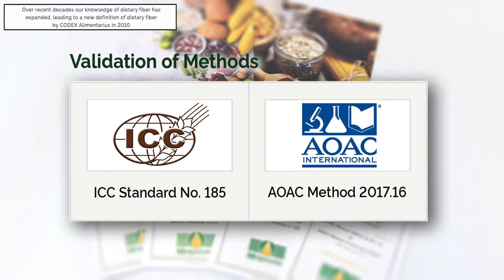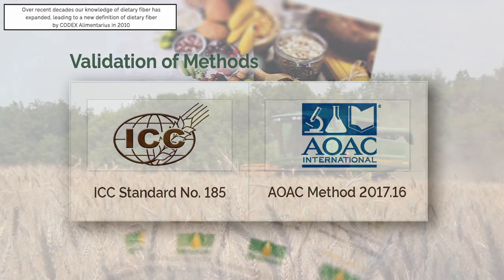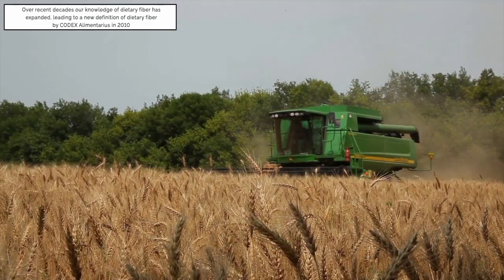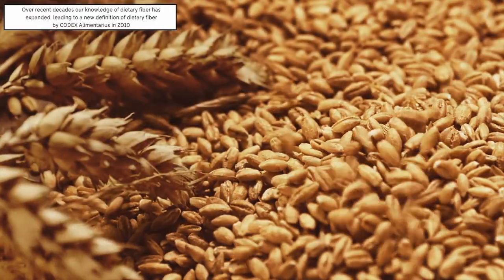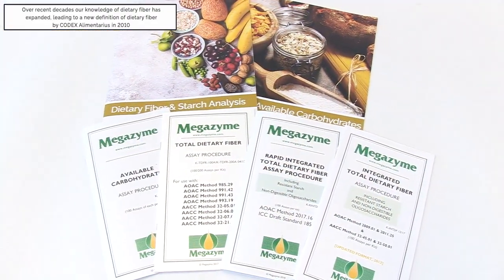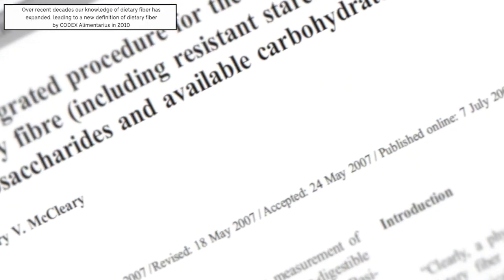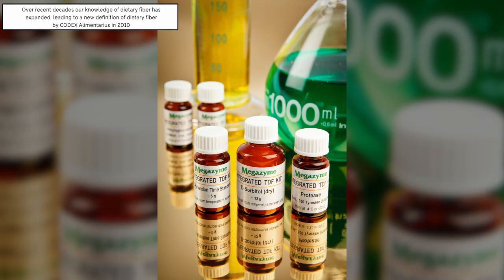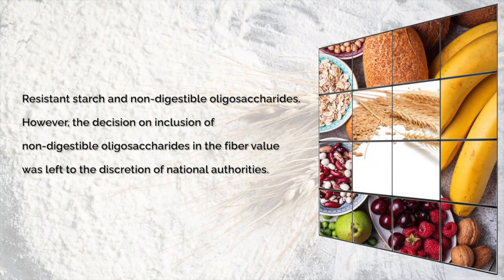Over recent decades, our knowledge of the physiological significance of dietary fibre has expanded, leading to the introduction of a new definition of dietary fibre by Codex Alimentarius in 2010. In this definition, the fibre components captured by the Prosky Method are included, as well as resistant starch and non-digestible oligosaccharides. However, the decision on inclusion of non-digestible oligosaccharides in the fibre value was left to the discretion of national authorities.